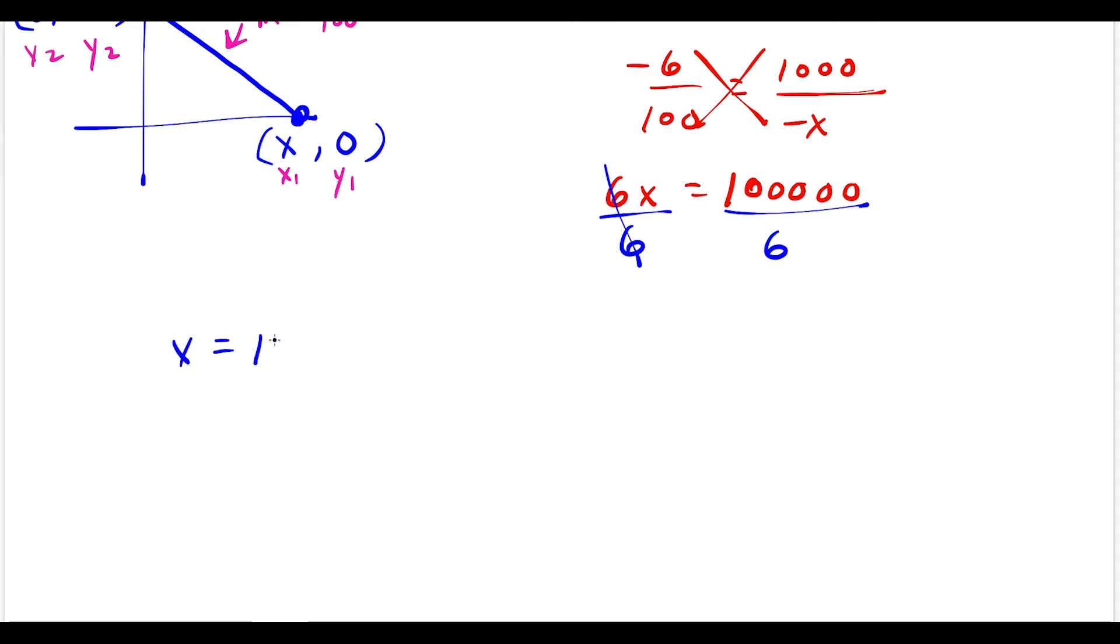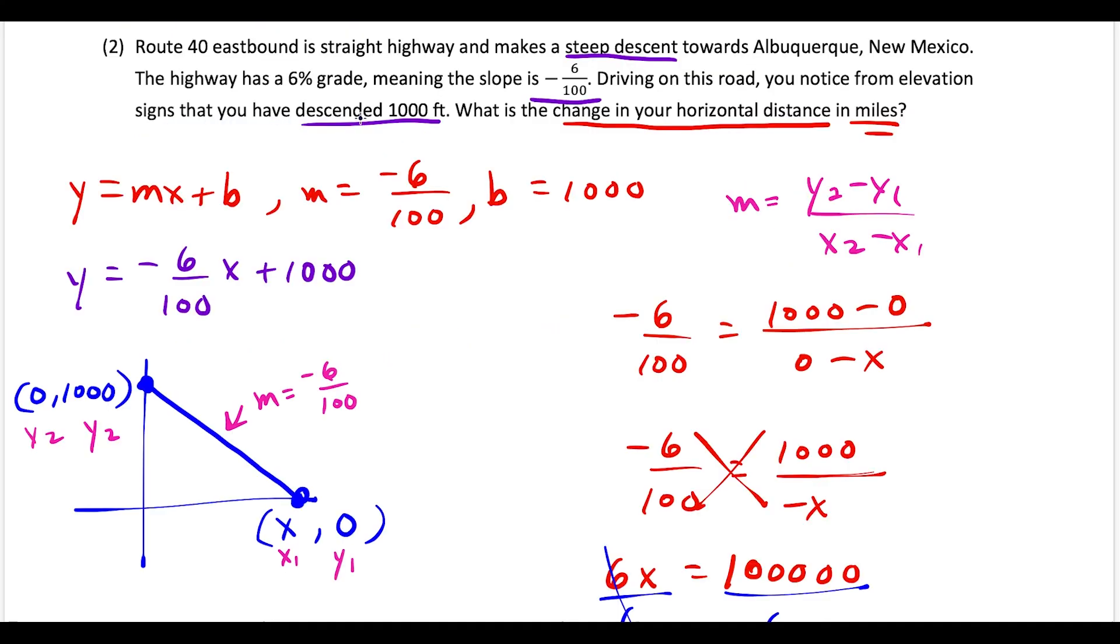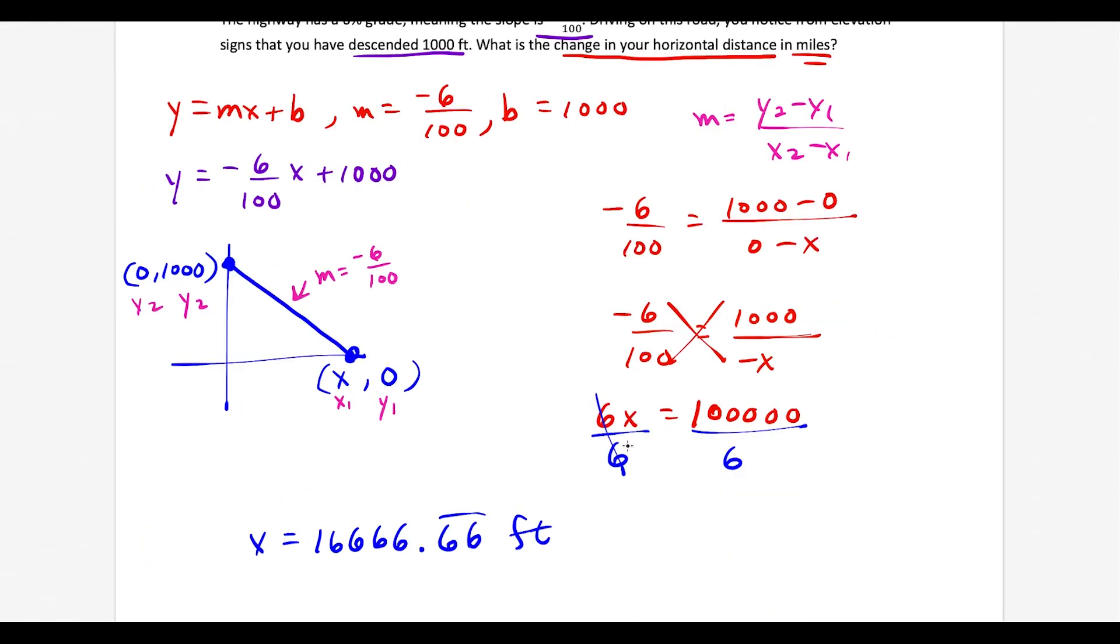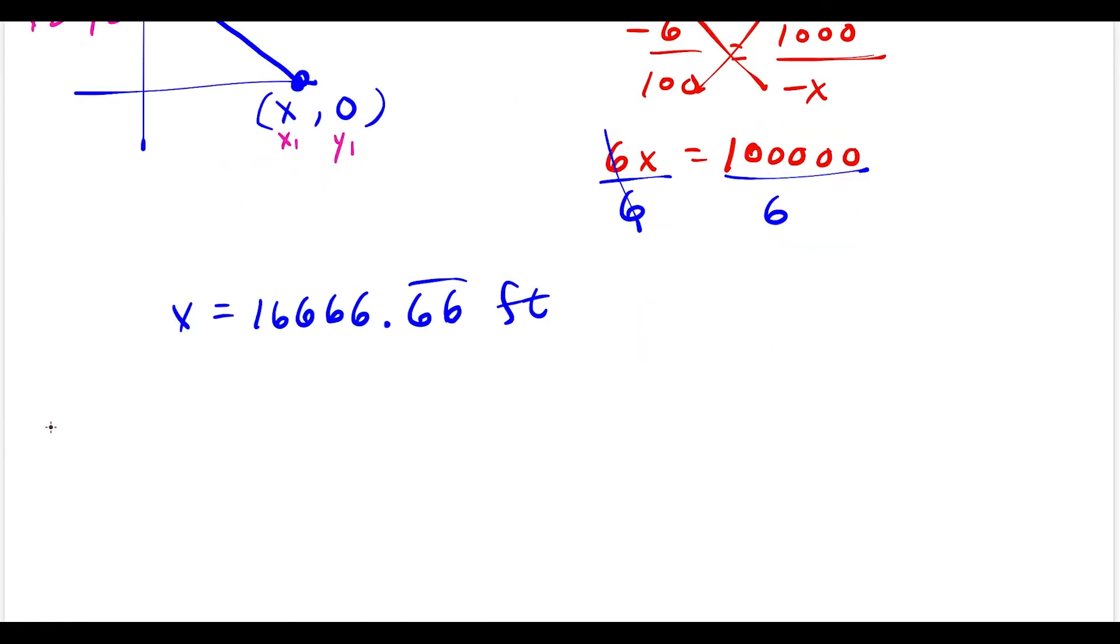You can punch this in a calculator, but x equals 16,666.66̄ feet. We tack on feet at the end because in the beginning of the question, we were told we descended 1000 feet, so all of this is in terms of feet. We're going down 1000 feet and over 16,666.66̄ feet. But if we stop here, we'll lose points because our final answer should be in miles.